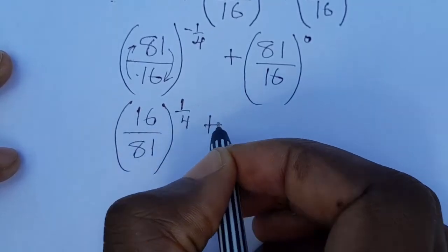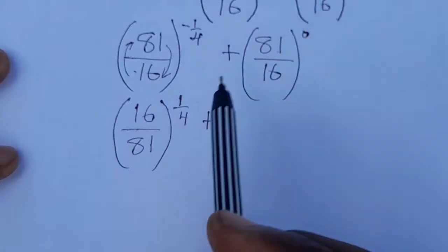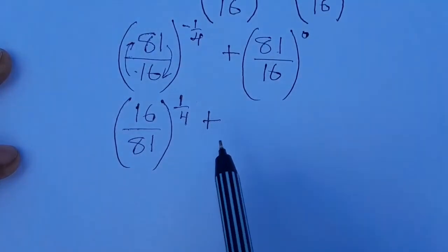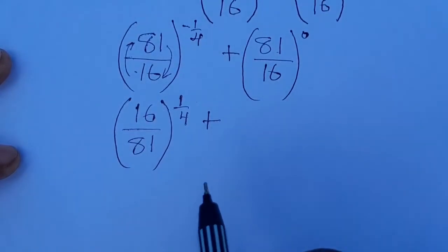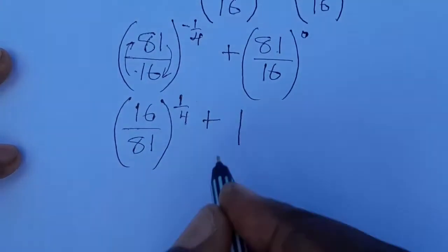Plus, when you look at this, the whole thing has been raised to the power 0. By the laws of indices, anything, any number to the power 0 is 1. So the whole of this thing is becoming a 1.